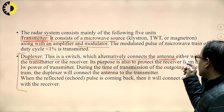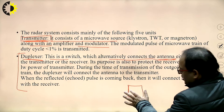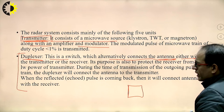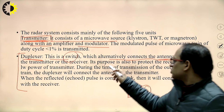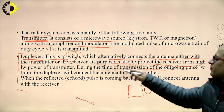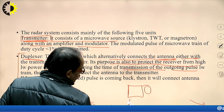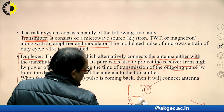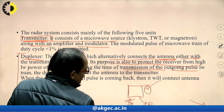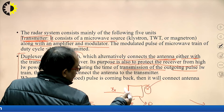The duplexer's purpose is to protect the receiver from the high power of the transmitter. During transmission of the outgoing pulse, the duplexer connects the antenna to the transmitter and does not connect to the receiver. During reception, the duplexer connects to the receiver and does not connect to the transmitter. When the reflected echo pulse returns, it connects the antenna with the receiver.